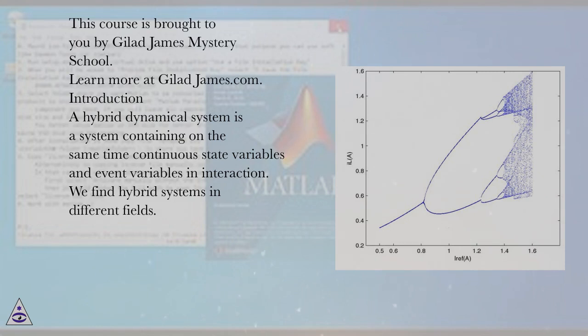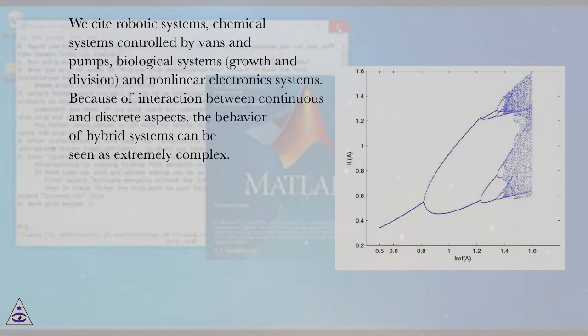Introduction: A hybrid dynamical system is a system containing at the same time continuous state variables and event variables in interaction. We find hybrid systems in different fields. We cite robotic systems, chemical systems controlled by valves and pumps, biological systems, growth and division, and nonlinear electronic systems. Because of interaction between continuous and discrete aspects, the behavior of hybrid systems can be seen as extremely complex.